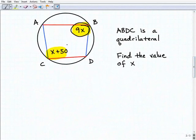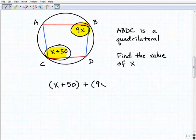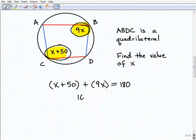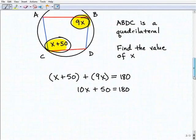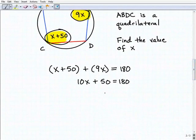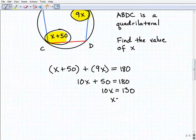So knowing that, I could simply write an equation saying, I have an angle here, x plus 50, and if I add that to this other angle, 9x, these are opposite angles in this inscribed quadrilateral, I know I'm going to get 180 degrees. The question is asking to solve for x. So this would be 10x plus 50 equals 180. Now I'm going to subtract 50 from both sides, and I'll get 10x equals 130. Dividing both sides by 10, I get x equals 13.